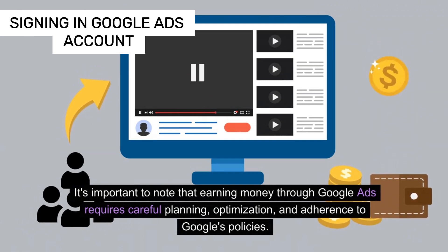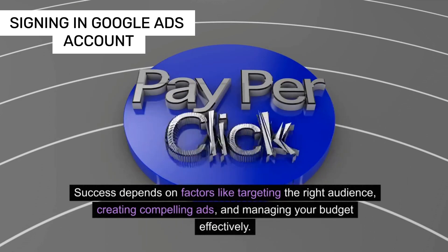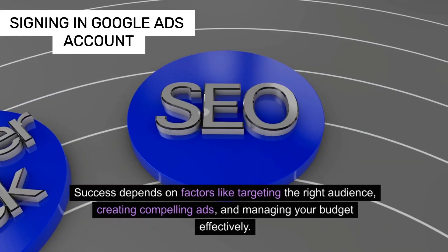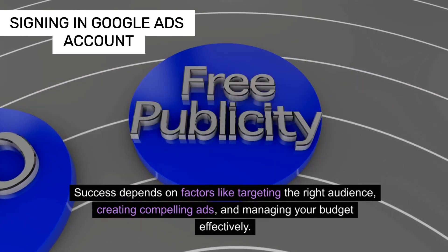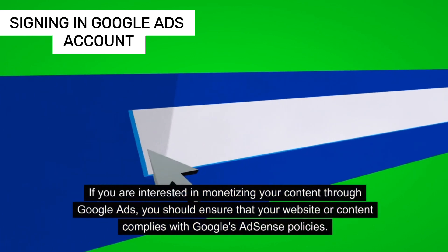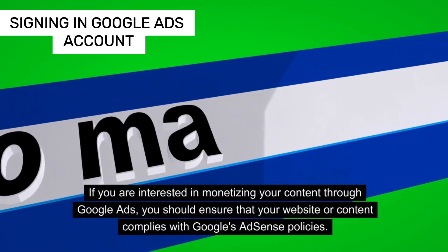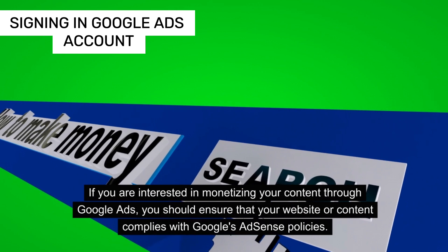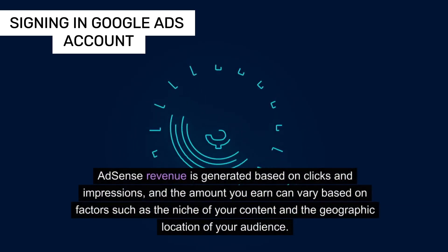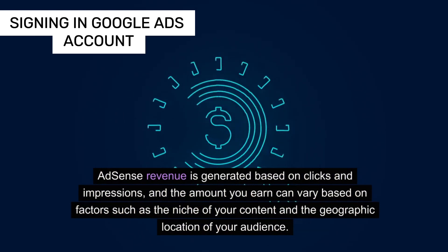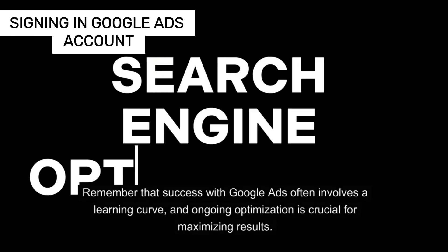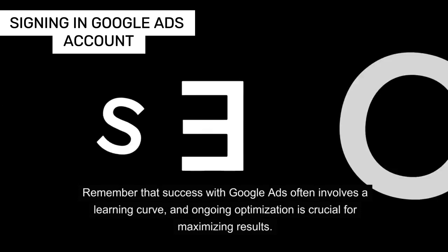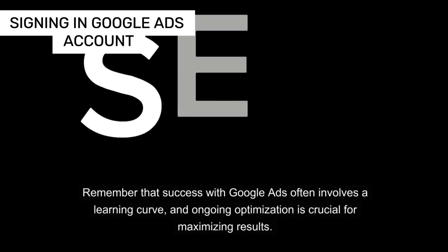Success depends on factors like targeting the right audience, creating compelling ads, and managing your budget effectively. If you are interested in monetizing your content through Google Ads, ensure that your website or content complies with Google's AdSense policies. AdSense revenue is generated based on clicks and impressions, and the amount you earn can vary based on factors such as the niche of your content and the geographic location of your audience. Remember that success with Google Ads often involves a learning curve, and ongoing optimization is crucial for maximizing results.